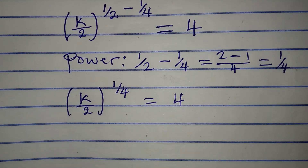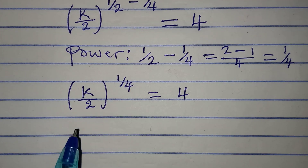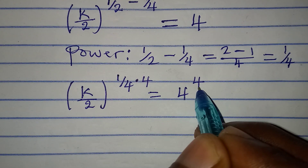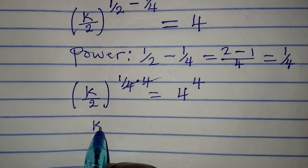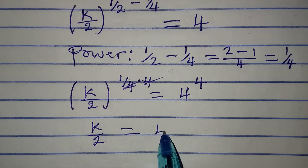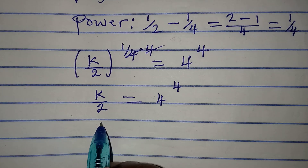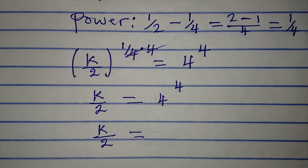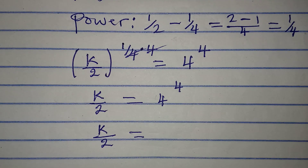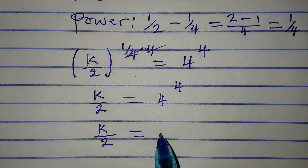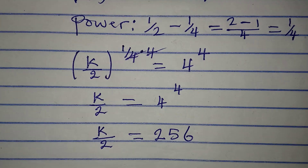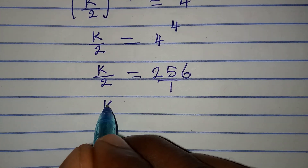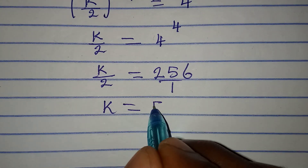The next thing I will do is to remove this power of 1 over 4. To remove that, I'll multiply the power by 4, and on the other side, raise it to the power of 4. Now 4 cancels 4, and k over 2 is equal to 4 to the power of 4. So k over 2 equals 4 to the power of 4. It's not 16, because 4 to the power of 4 is 4 times 4 times 4 times 4, and that gives us 256. Since it's over 1, we can cross multiply, so k equals 2 times 256, which is 512.